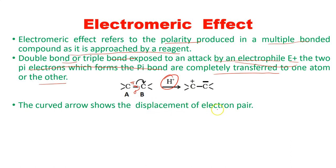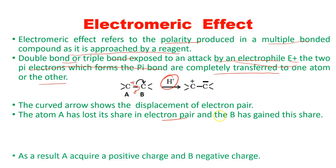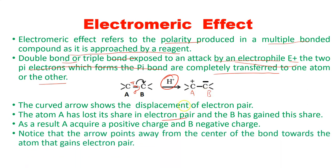The curved arrow shows the displacement of an electron pair. The pi bond's two electrons are transferred as a lone pair towards carbon B, shown by the curved arrow. A has lost its electron pair and B has gained it. As a result, A acquires a positive charge and B acquires a negative charge. Notice that the arrows point away from the center of the bond towards the atom that gains the electron pair — carbon B gets a negative charge and carbon A gets a positive charge.